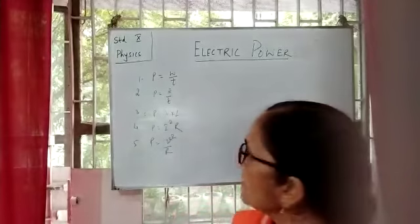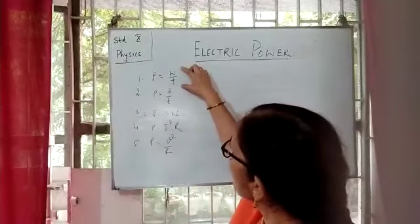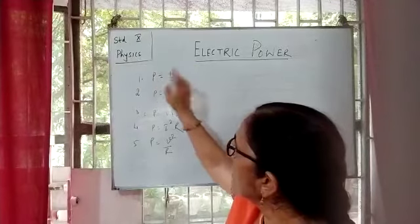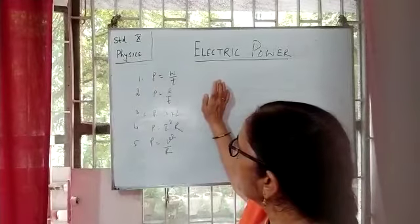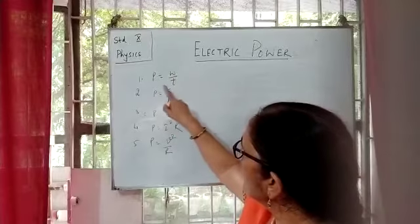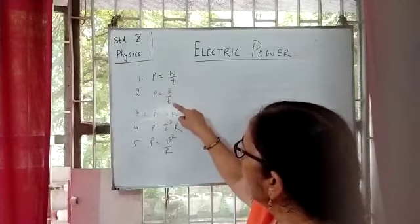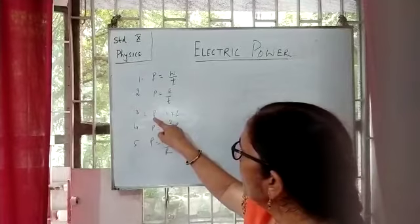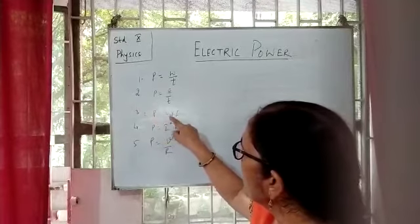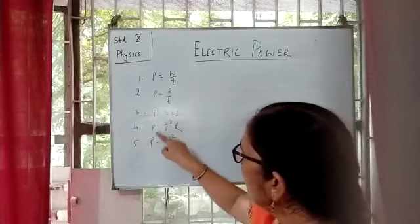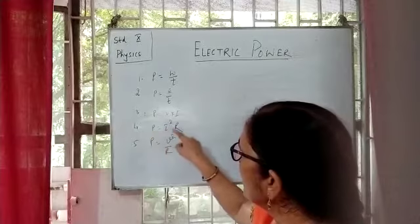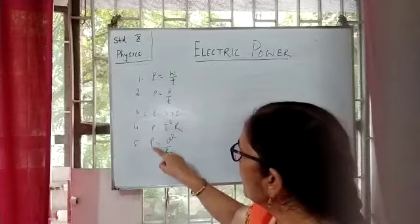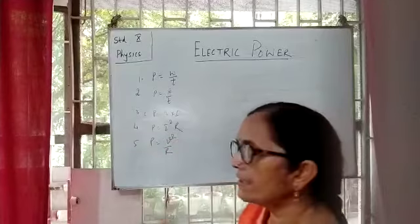In the first relation, we see how work done, time, and power are related. The second is the relation of power, energy, and time. The third is the relation between power, potential difference, and current. The fourth is power, current, and resistance. And the last one is power, potential difference, and resistance.